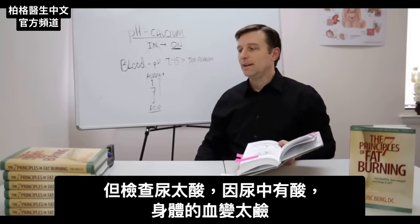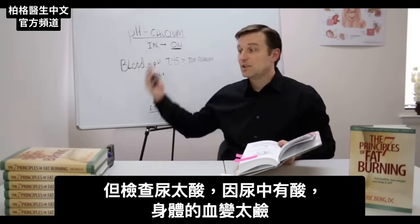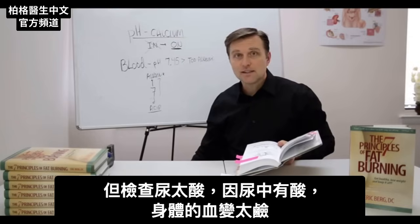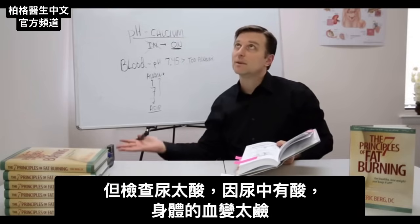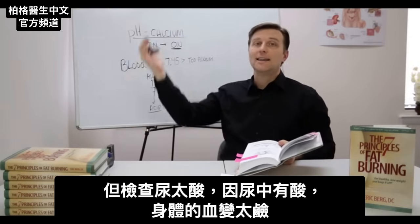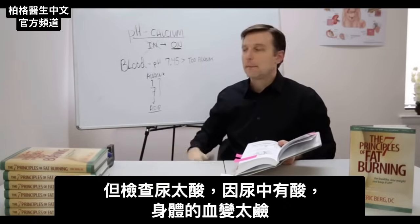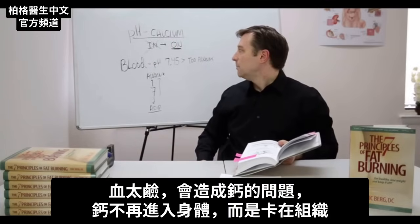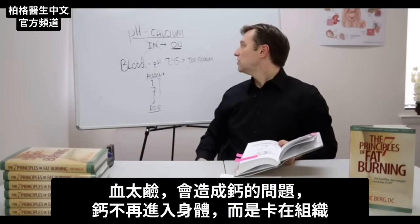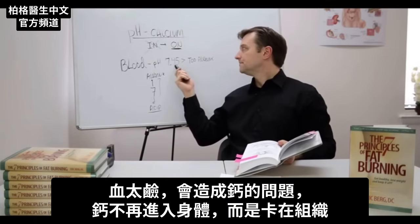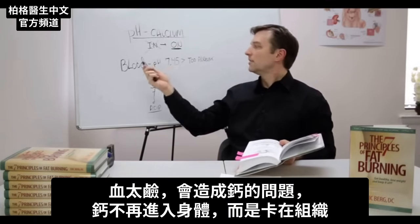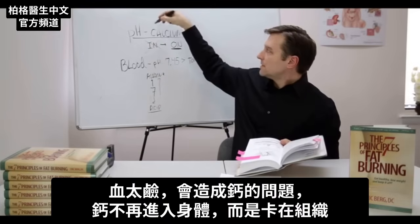When you measure the urine, it's excessively acid because you're dumping all your acids, and on the opposite end, the blood is becoming too alkaline. When the blood is overly alkaline, you're going to have a big problem with calcium.